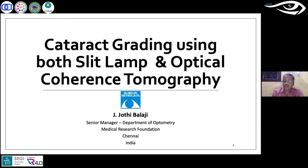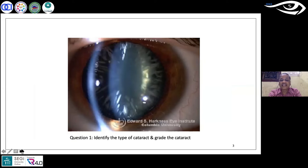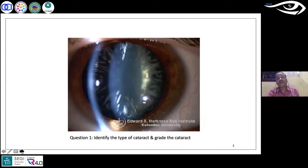Before moving to the talk, let me wish all participants a very happy New Year 2021. Hopefully we will meet in person and talk like regular normal — not the new normal. So basically, you need to identify what the cataract is and grade it. We launched a poll: looking at the image on the slide, we want to know what type of cataract it is and what grade. Majority say it's cortical spokes, grade three.